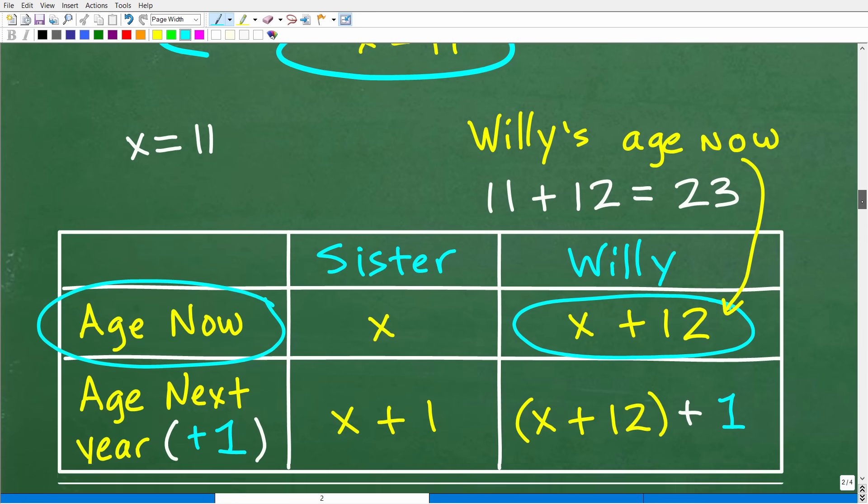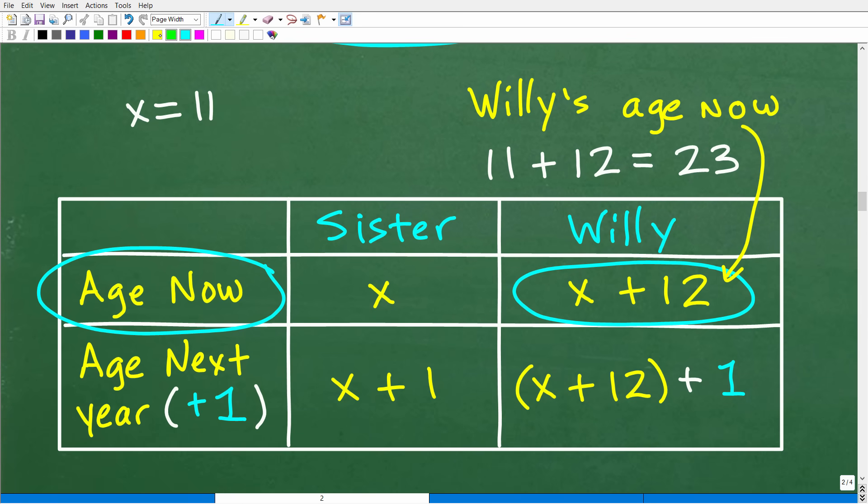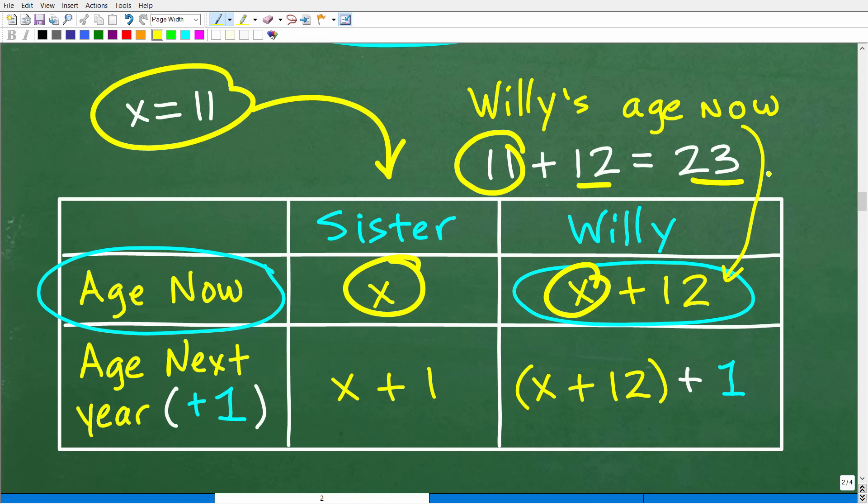Okay, so X is equal to 11. So what does that mean? Well, X is 11. Remember, we assigned the variable X to represent the sister's age now. Okay, so the question is, how old is Willie right now? All right, so Willie's age right now is going to be X, okay, which is 11, plus 12, right? So Willie is X plus 12, so this would be 11 plus 12, which makes him 23.